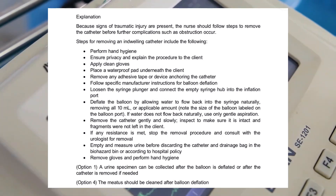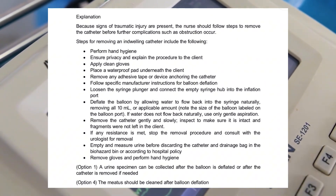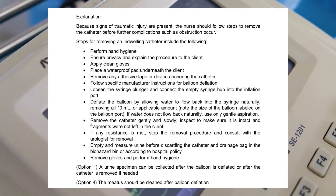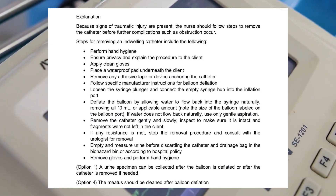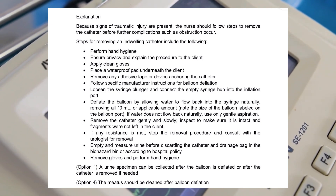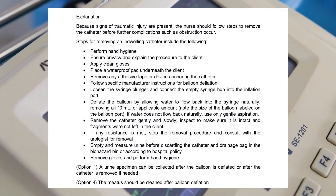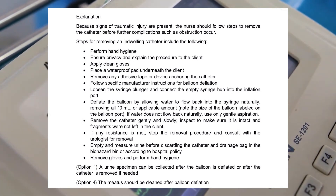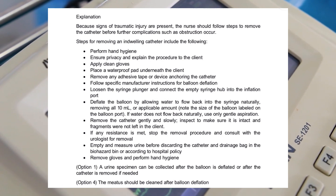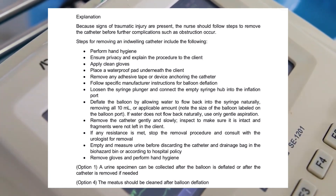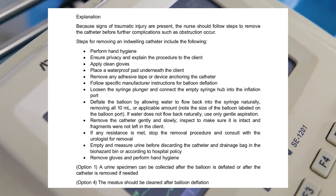Follow specific manufacturer instructions for balloon deflation. Loosen the syringe plunger and connect the empty syringe hub into the inflation port. Deflate the balloon by allowing water to flow back into the syringe naturally, removing all 10 milliliters or the applicable amount noted on the balloon port. If water does not flow back naturally, use only gentle aspiration. Remove the catheter gently and slowly. Inspect to make sure it is intact and no fragments were left in the client. If any resistance is met, stop the removal procedure and consult the urologist. Empty and measure urine before discarding the catheter and drainage bag. Remove gloves and perform hand hygiene.